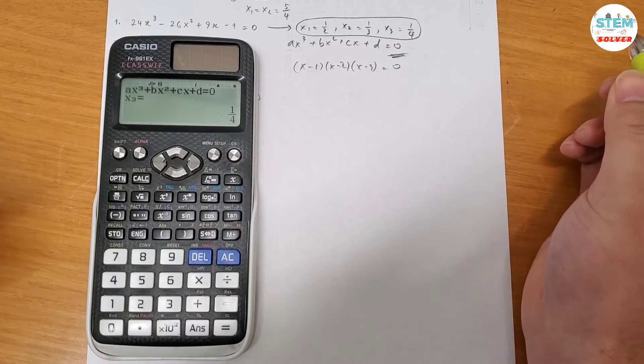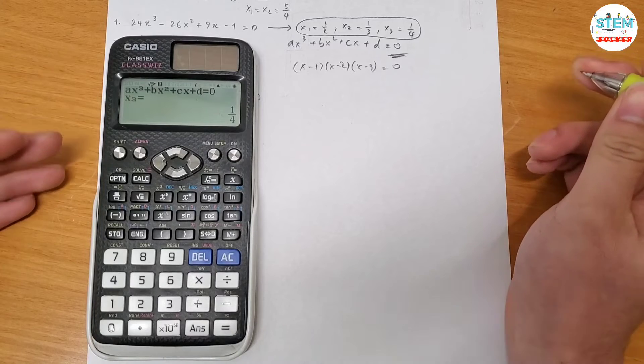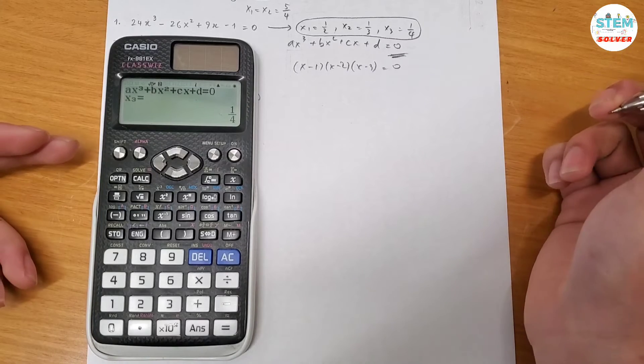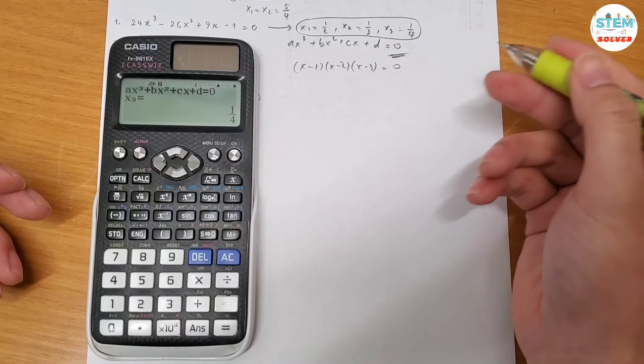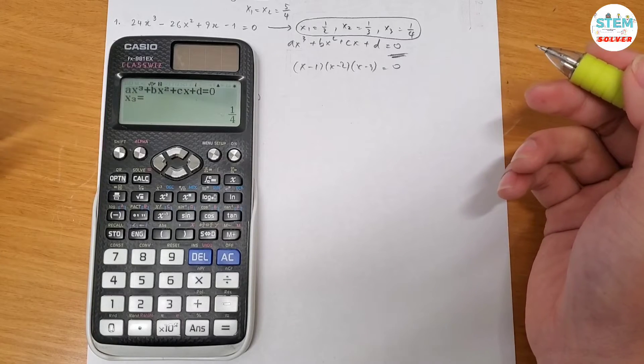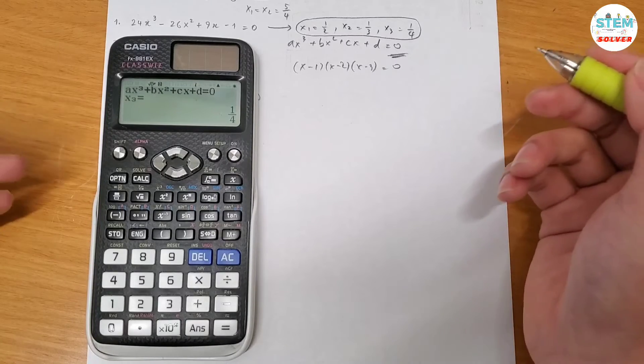So if you get stuck during your calculation, you can use this method to check your answer or get the answer right away and hopefully your teacher or professor will give you some partial credit.